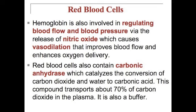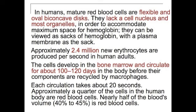Hemoglobin is also involved in regulating blood flow and blood pressure via the release of nitric oxide, which causes vasodilation, improving blood flow and enhancing oxygen delivery. Red blood cells also contain carbonic anhydrase, which catalyzes the conversion of carbon dioxide and water to carbonic acid. This compound transports about 70% of carbon dioxide in the plasma and also acts as a buffer. In humans, mature red blood cells are flexible, oval, biconcave discs that lack a cell nucleus and most organelles to accommodate maximum space for hemoglobin — they can essentially be viewed as sacks of hemoglobin.